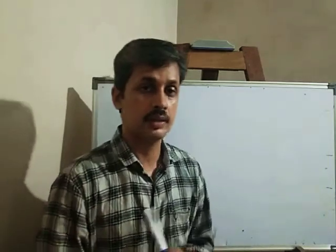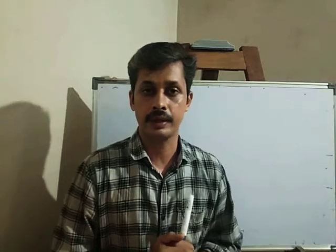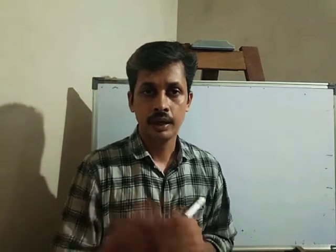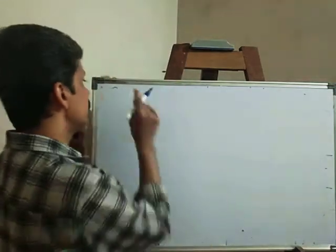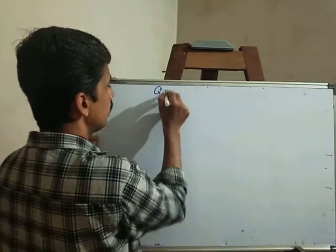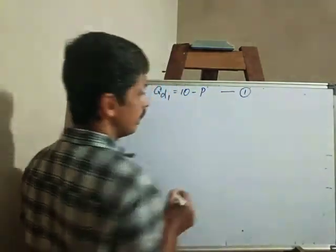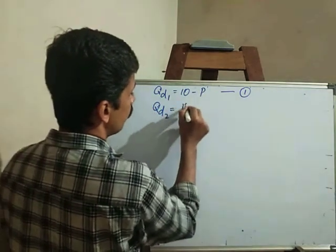We are discussing the linear demand function and equation. We are going to discuss two consumers in the market and their demand curve equations. The first consumer demand curve equation is qd1 is equal to 10 minus p. The second consumer equation is qd2 is equal to 15 minus p.